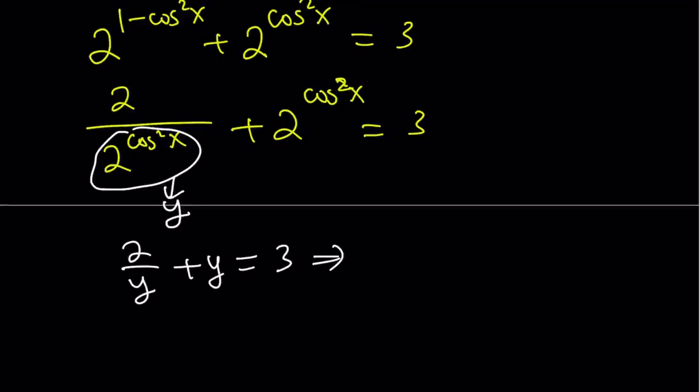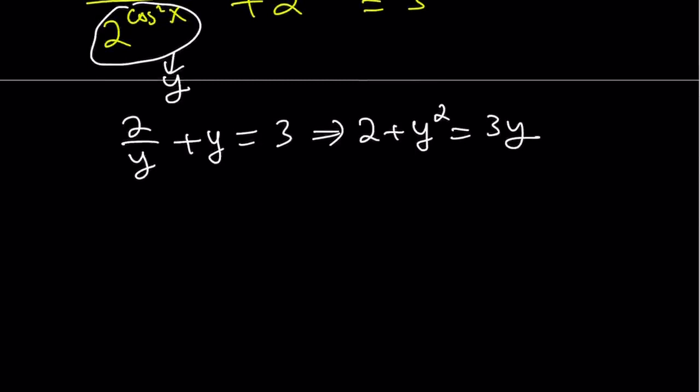Now we know that y cannot equal 0 because 2 to the power of something can never equal 0. And in this equation obviously y equals 0 would not satisfy the equation. So we can multiply both sides by y and that's going to give us 2 plus y squared equals 3y. It's better than making a common denominator even though it's the same thing.